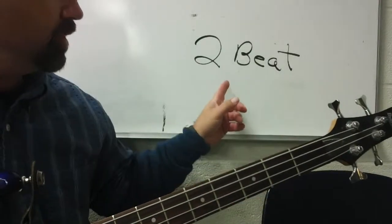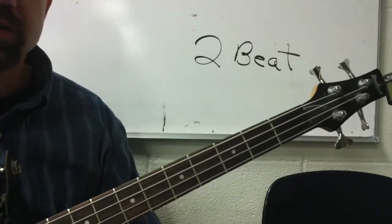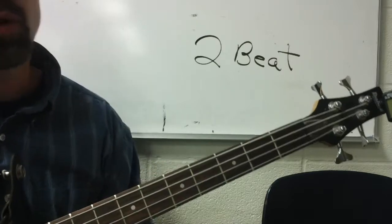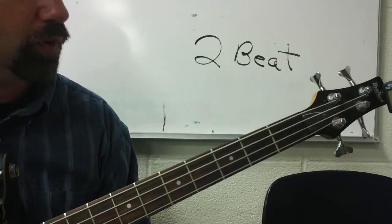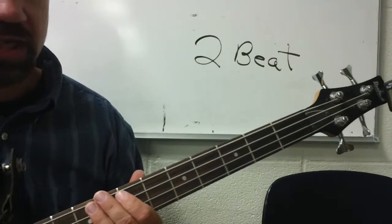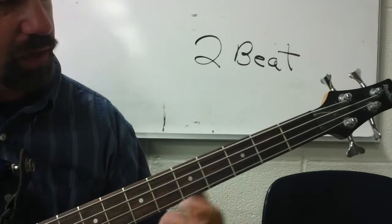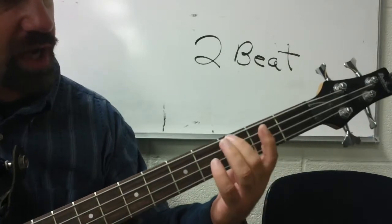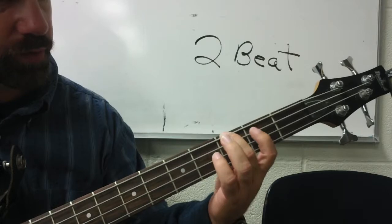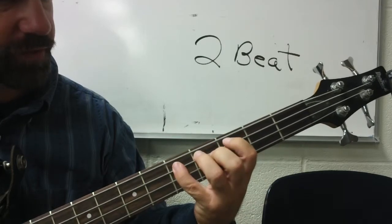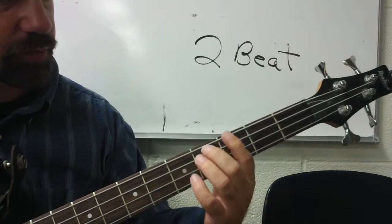This next video is going to be on two-beat patterns, and to play two-beat patterns we really need to know where roots and fifths are for the chords. So we're going to use G as an example here and play our G triad, which is root, third, fifth — but we're just going to concentrate on the root and the fifth.